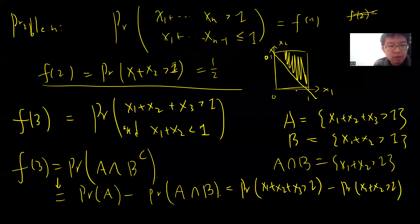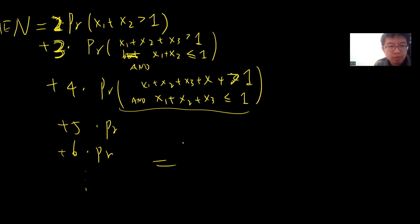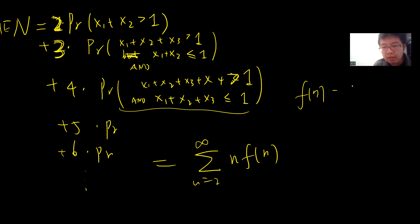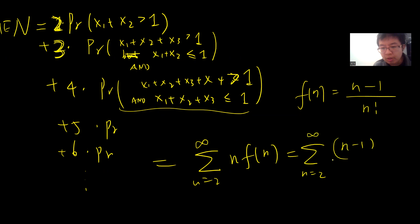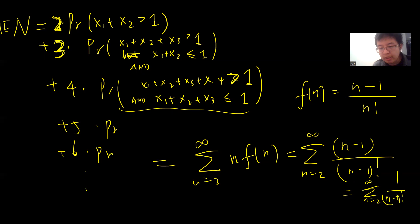Now going back to the expectation: E[N] = sum from n=2 to infinity of n·f(n) = sum of n·(n−1)/n! = sum of (n−1)/(n−1)! = sum of 1/(n−2)!. Changing variables (let m = n−2), this becomes the sum of 1/m! from m=0 to infinity, which equals e.